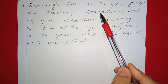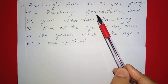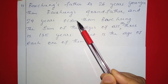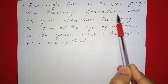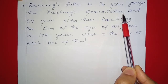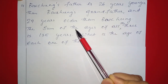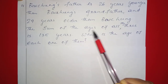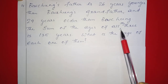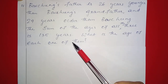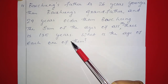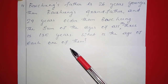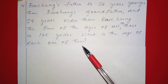Next question: Pejong's father is 26 years younger than Pejong's grandfather and 29 years older than Pejong. The sum of the ages of all three is 135 years. What is the age of each of them?